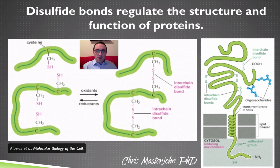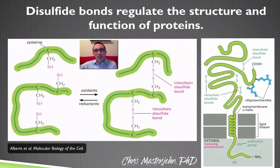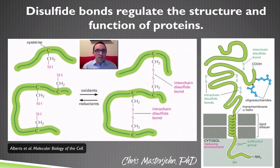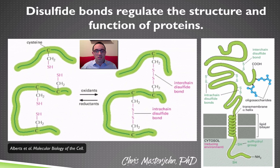Glutathione is not just an antioxidant and a detoxifier — it's also a key regulator of protein function. It does this partly by controlling disulfide bonds within proteins themselves, and it can also form disulfide bonds with proteins and act as a molecular switch to turn the protein on or off. The picture on the screen shows a cartoon version of how disulfide bond formation affects protein function. Any protein's function is always determined by its three-dimensional structure, and if you change that structure you change its function — just like a key, whether it gets into a lock is dependent on its particular shape.